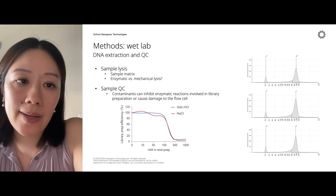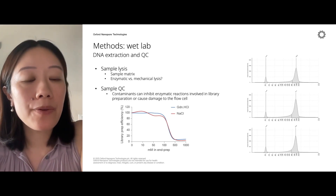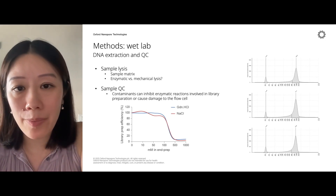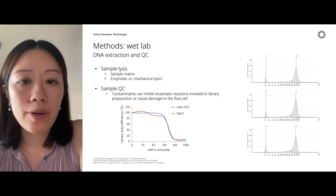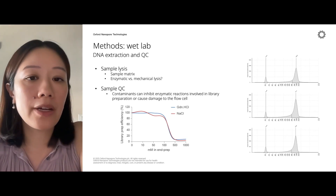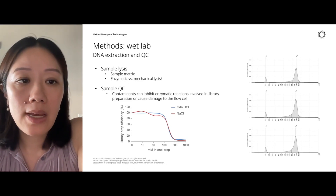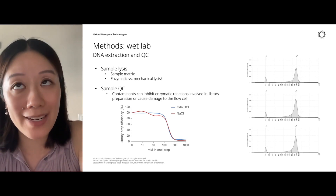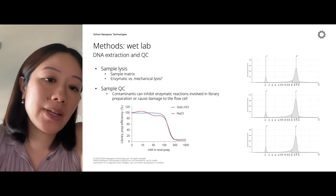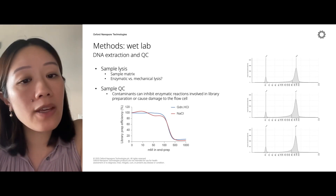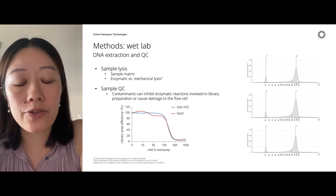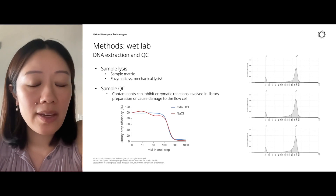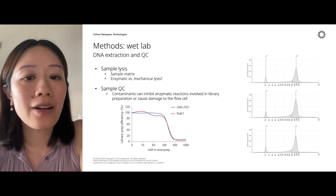Another important aspect is sample QC. Environmental samples like fecal or soil can contain compounds that competitively bind to pores compared to DNA and can promote premature pore degradation. There are also compounds often used in DNA extraction, like guanidine HCl, the trace of which is shown here, that you want to make sure you're removing before downstream processes because they can inhibit enzymatic reactions. Just two things to watch out for when it comes to dirtier environmental samples.